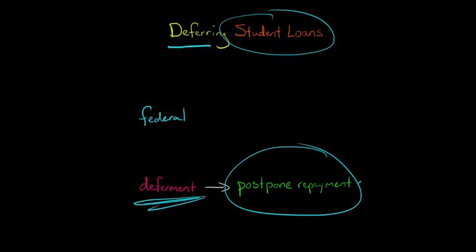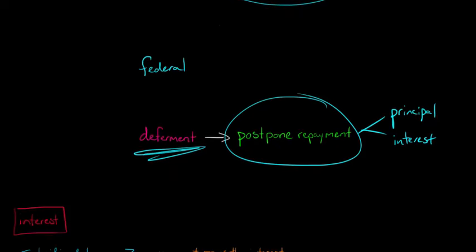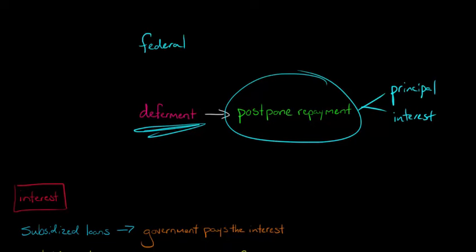Basically you can postpone not just the interest but also the principal. Both the principal and the interest you do not have to pay. If they are subsidized loans, let's say it's a Perkins loan for example, a subsidized federal loan...